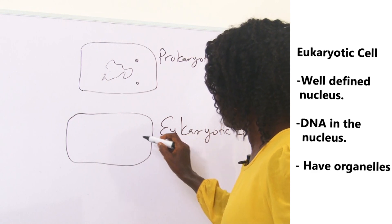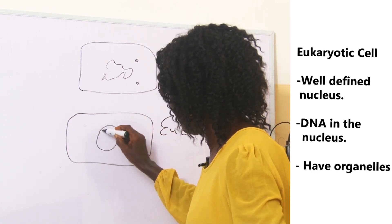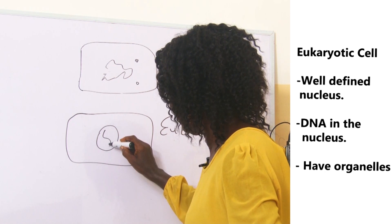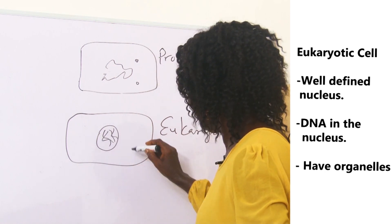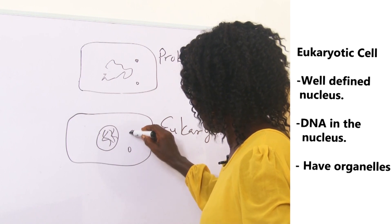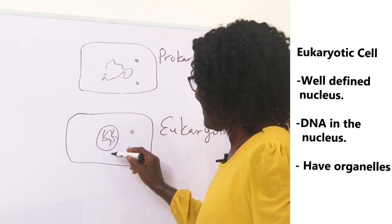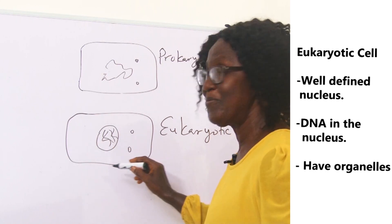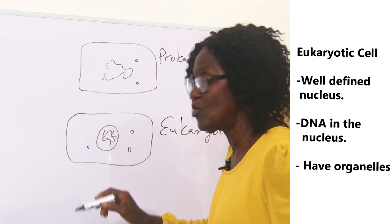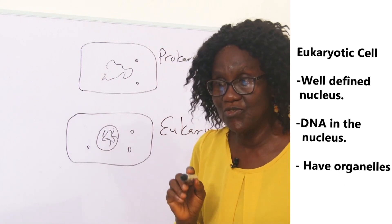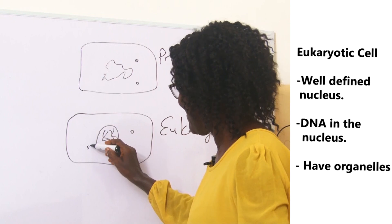Eukaryotic cells have a well-defined nucleus. They have DNA in their nucleus. And they have organelles — mitochondria, endoplasmic reticulum. You can take the opportunity to revise cells in lesson one.